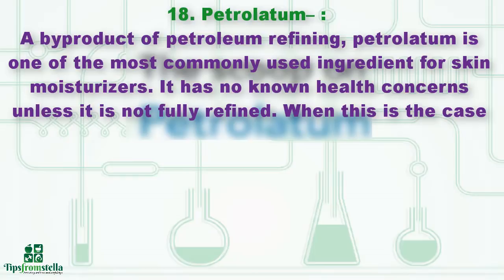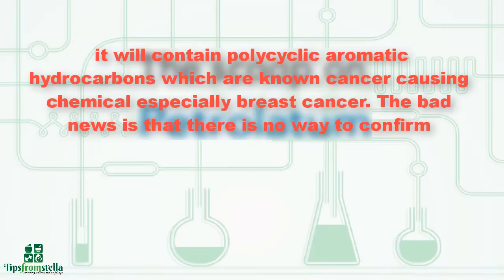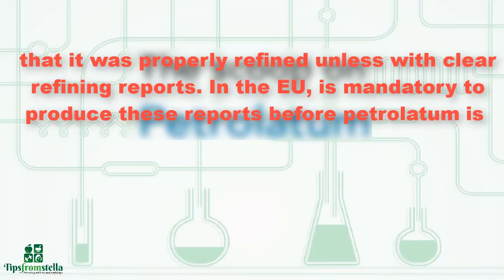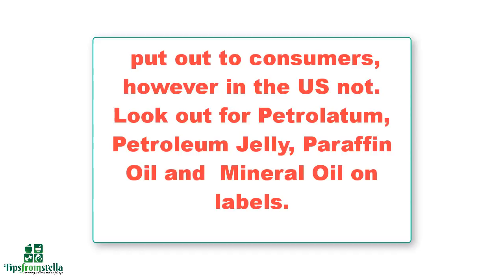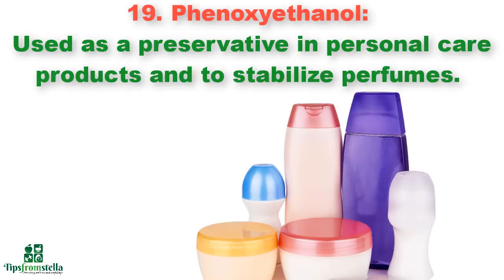Number eighteen: petrolatum. This is a byproduct of petroleum refining and one of the most commonly used ingredients in skin moisturizers. It has no known health concerns unless it is not fully refined — in which case it will contain polycyclic aromatic hydrocarbons, which are known cancer-causing chemicals, especially linked to breast cancer. In the EU, it is mandatory to produce refining reports before petrolatum reaches consumers; however, in the US it is not. Look out for petrolatum, petroleum jelly, paraffin oil, and mineral oil on labels.